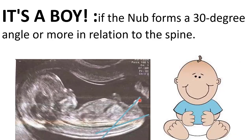Now this is another image. Here you can see the Nub. If I draw a line along the longitudinal axis of the Nub and a line along the longitudinal axis of the spine, we can see that they are not horizontal or parallel to each other. In fact, the Nub is pointing towards the spine. If the Nub is pointing towards the spine, or if the long axis of the Nub and the long axis of the spine are making an angle of 30 degrees or more, it means that you are going to have a baby boy.